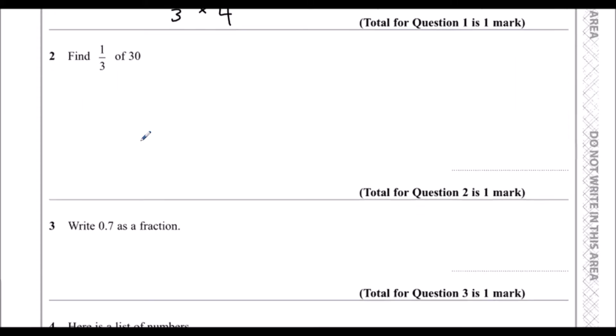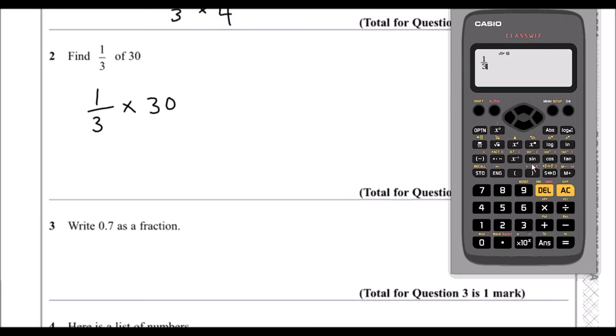Question 2 says find one third of 30. A third is the same as dividing by three — we're splitting it into three bits. So 30 divided by 3 is 10; three tens make 30, so a third of 30 is 10. On a calculator, whenever we have 'of' we can just change it to a times, so we can type in one third times 30 and that gives us 10.